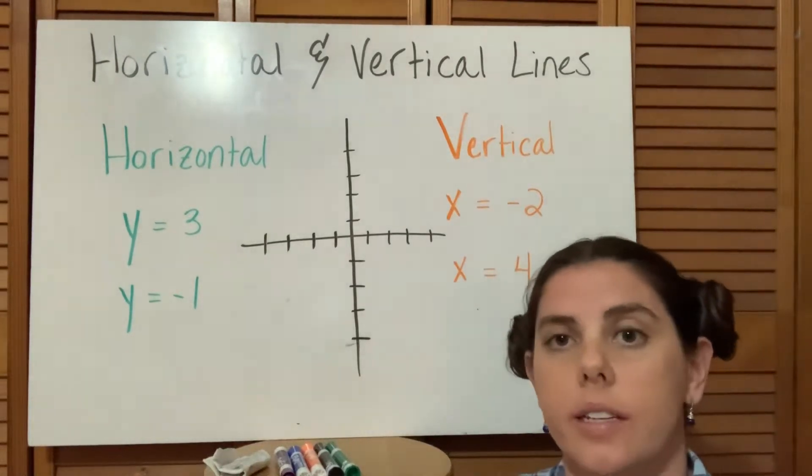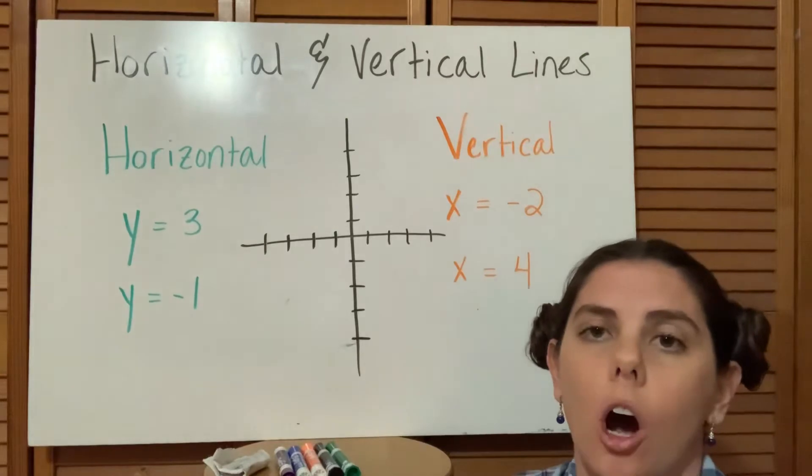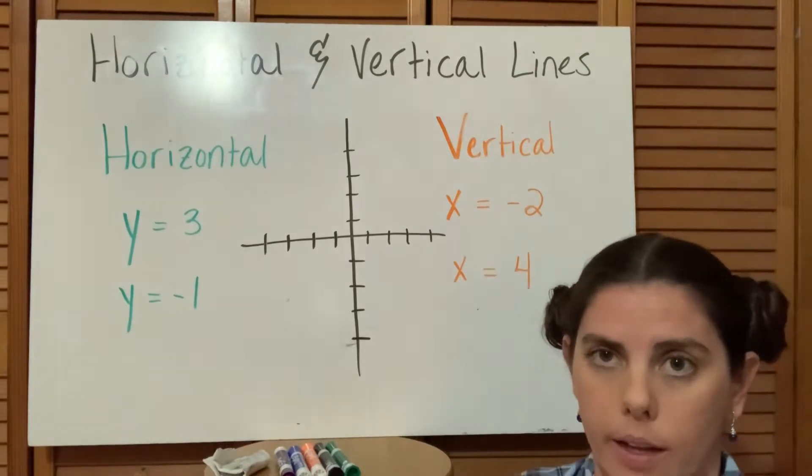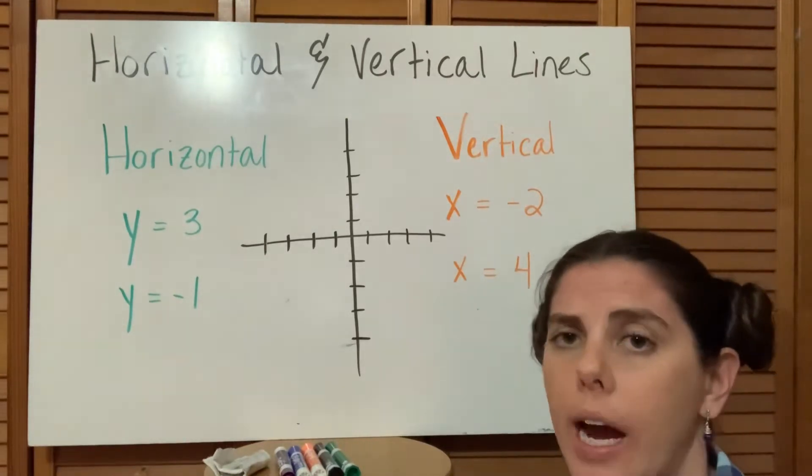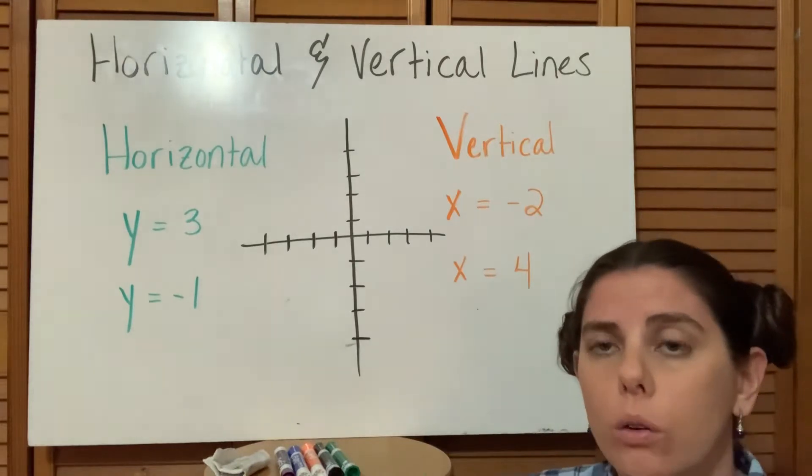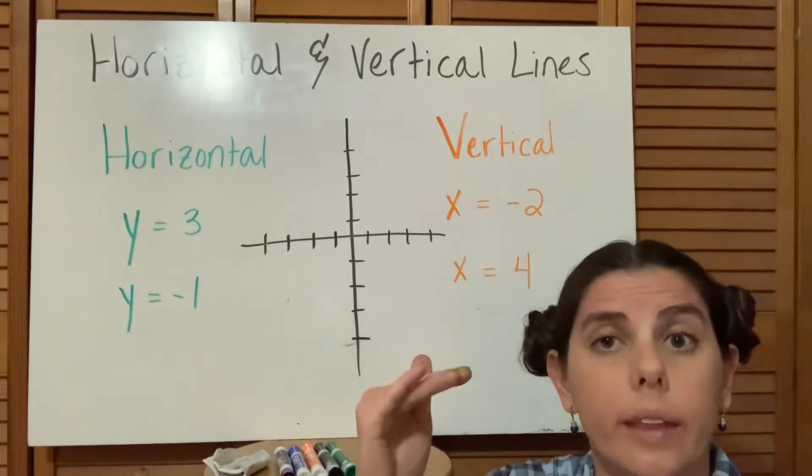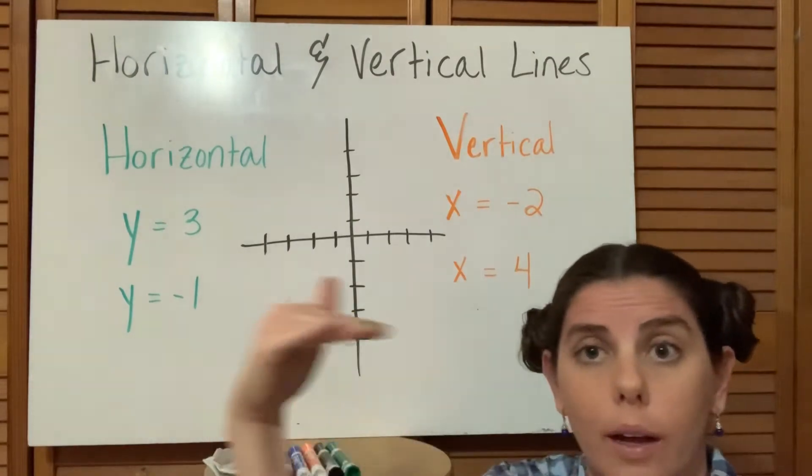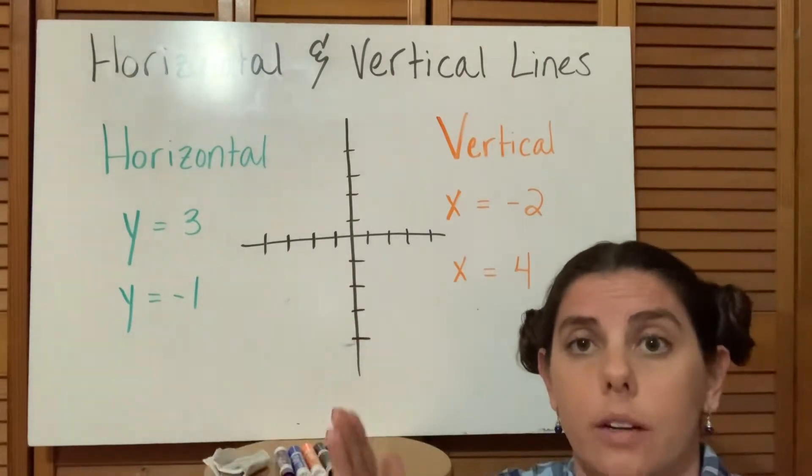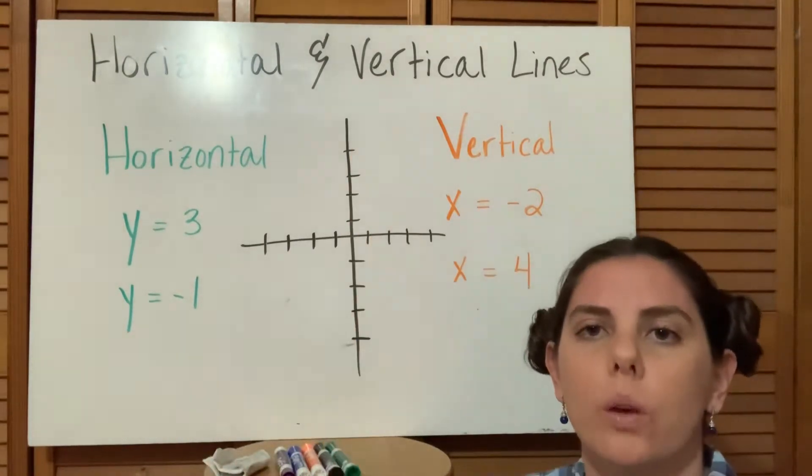Another concept covered in section 4.2 are vertical and horizontal lines. How do we graph those? How do we recognize what a vertical or horizontal line looks like? We know what they look like on a graph - a horizontal line goes like this and a vertical line goes like this - but how can we recognize their equations?